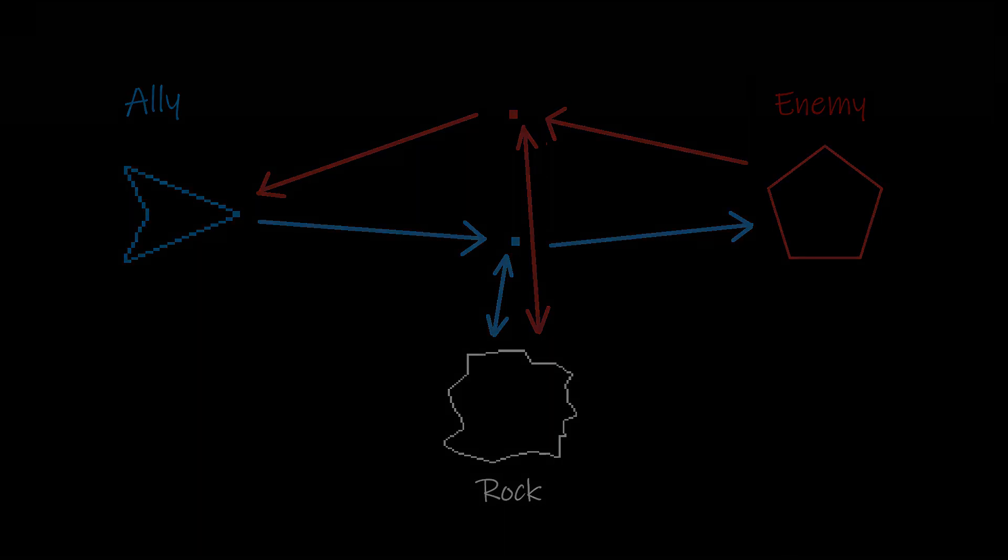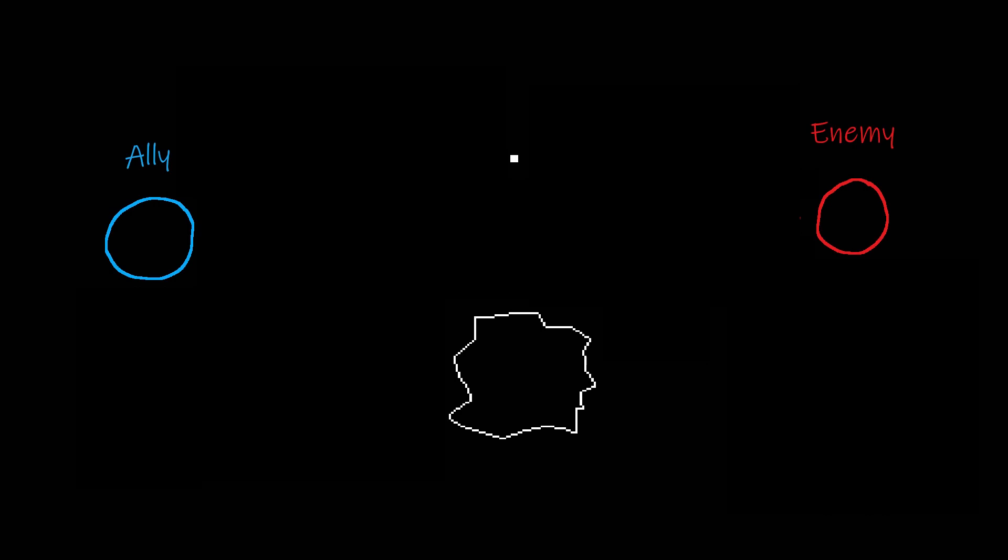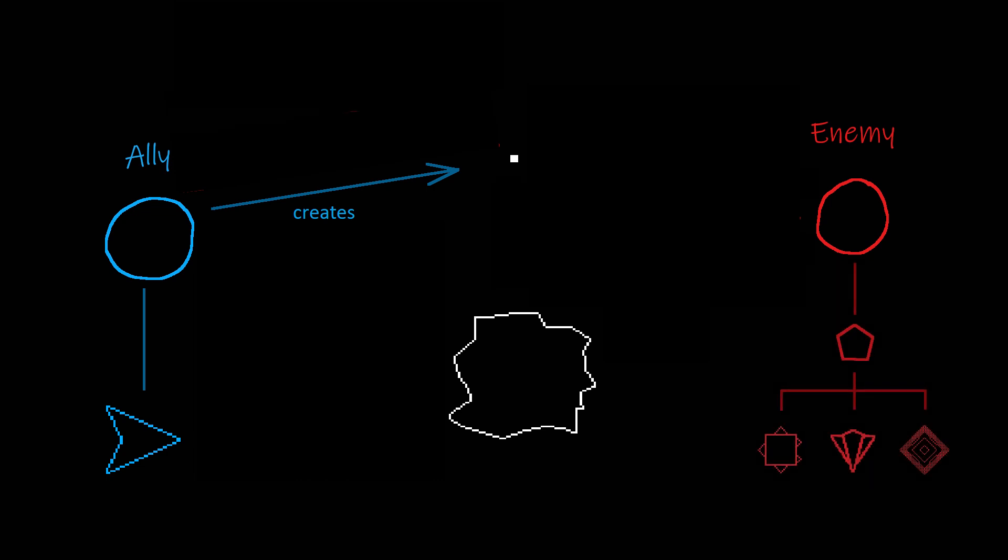And instead we can set up a faction system where all the objects belong to a certain faction. So the ship and perhaps if we create allies for the ship can belong to an ally faction. And when they create a bullet we can set the bullet's alignment to the allies. On the flip side we can make the parent of the enemy ship belong to the enemy faction. And perhaps later on we could even have debris or floating objects or floating guns or even structures that can belong to different factions.